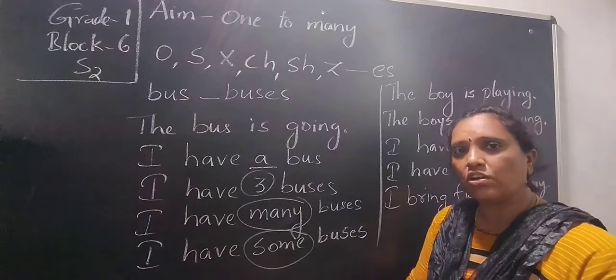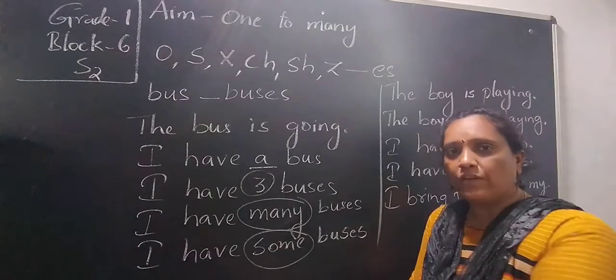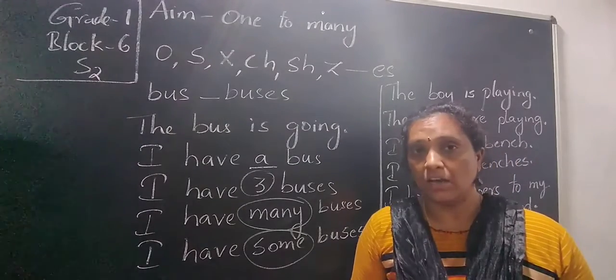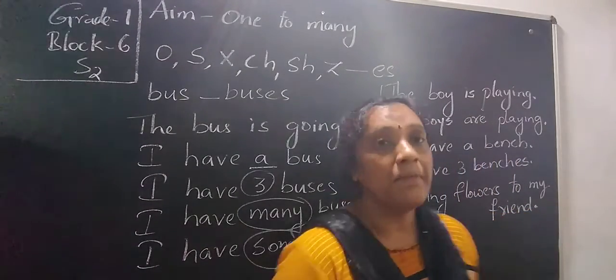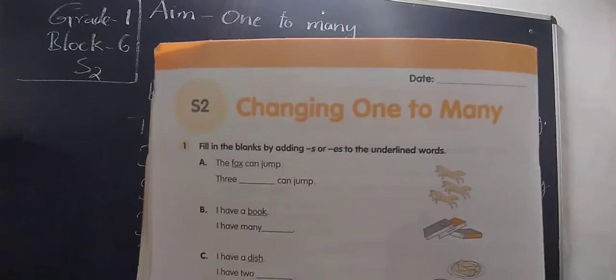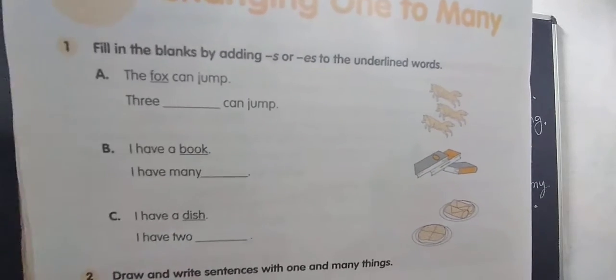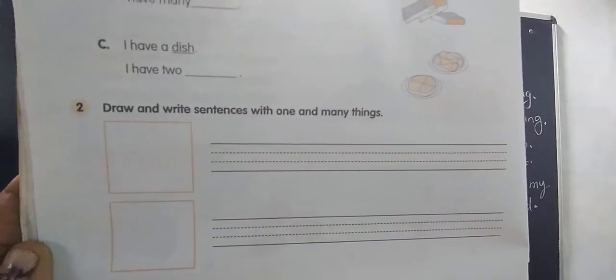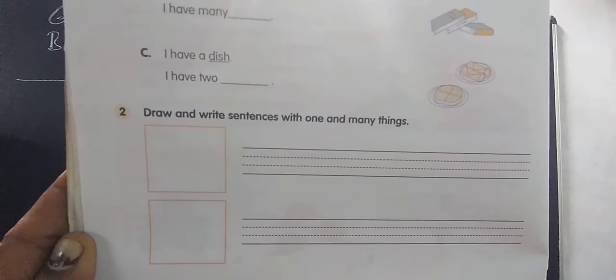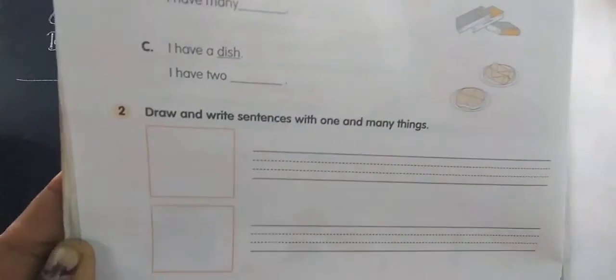I will send a worksheet — complete it by changing the singular to plural form. You can open your volume at page number 38, where you have exercises on changing one to many. Fill in the blanks by adding S or ES to the underlined words. Observe what letter each word is ending with and add accordingly. Also, draw and write sentences with one and many things — draw any object or person and write a sentence framing with one or many.